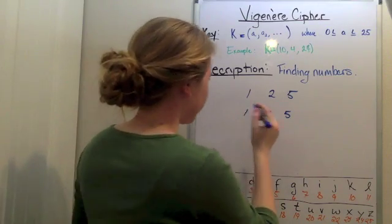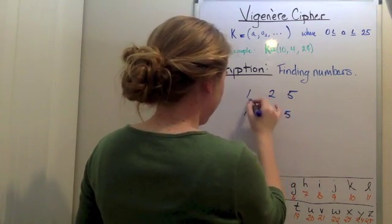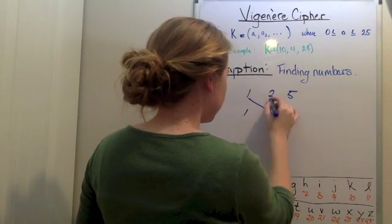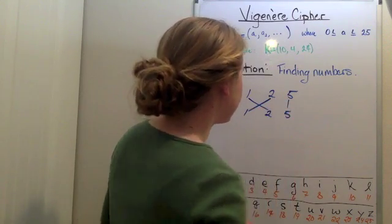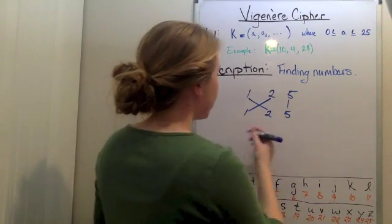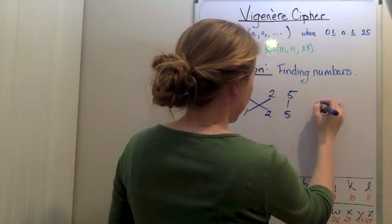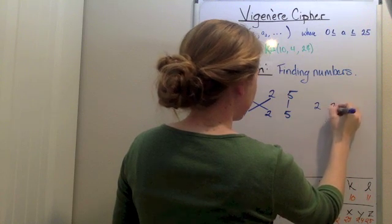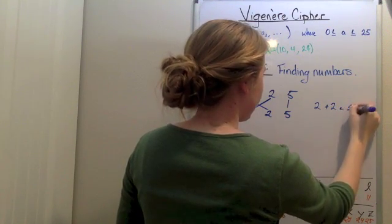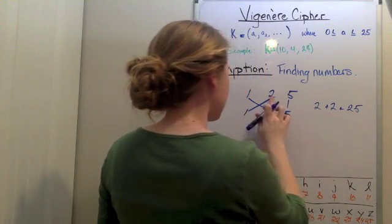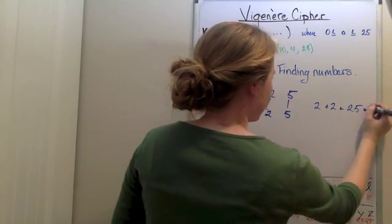Like I could say if I did one times two, two times one, and five times five. That could be an option. So that would be two plus two plus 25. All right, so we have 29.